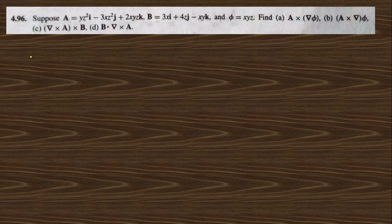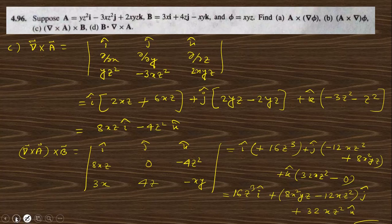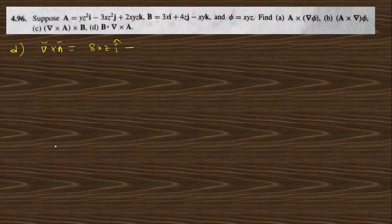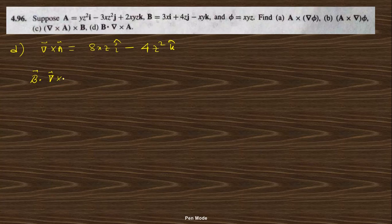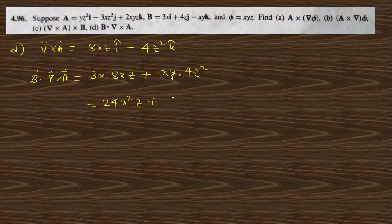Go to part d: divergence of curl(a), then dot with b. We already know curl(a) = 8xz i-cap − 4z² k-cap. Now b·curl(a): b·i-cap is bₓ = 3x, so 3x·(8xz) = 24x²z; b·k-cap is b_z = −xy, so −xy·(−4z²) = 4xyz². Therefore the answer is 24x²z + 4xyz².